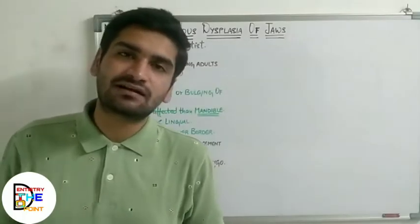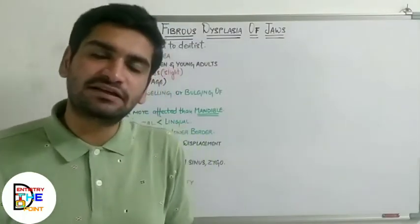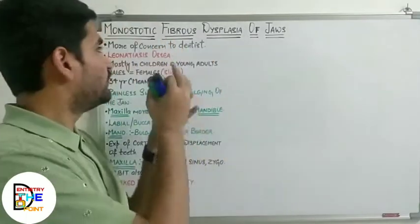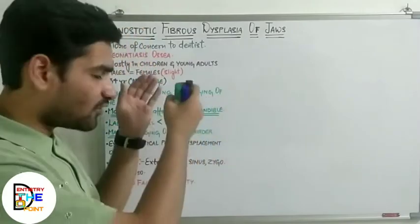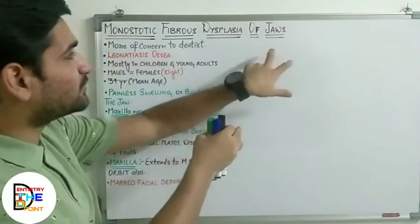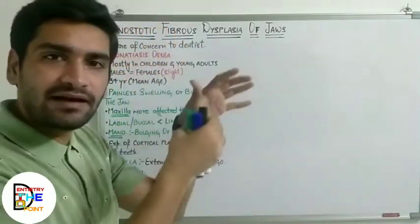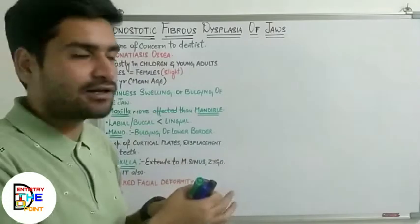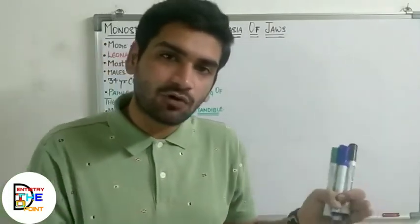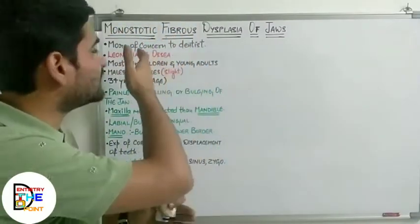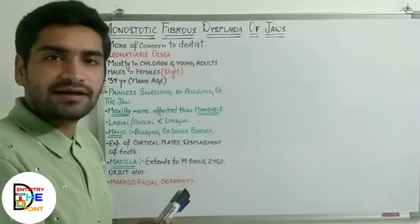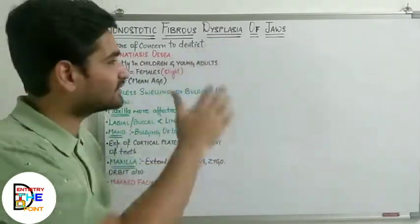Now, as we have seen the general clinical features of all three variants — monostatic, polystatic, and craniofacial forms — we need to see some clinical features which are of special interest for monostatic fibrous dysplasia, especially of the jaws. These are mainly of our concern, as the other variants affect the generalized whole body. This topic is more of concern to the dentist because we are going to face many such cases.